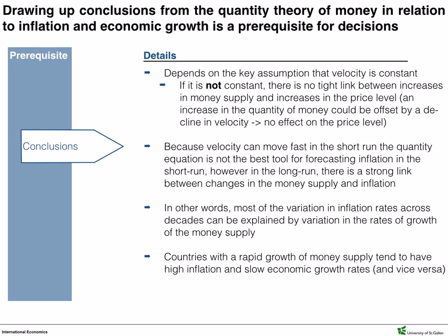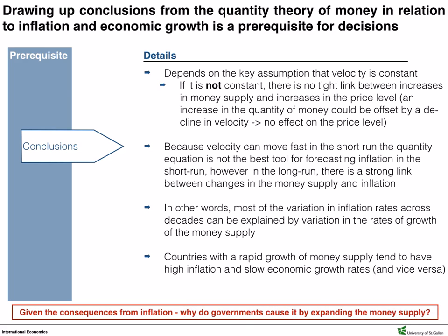Hence, there is no effect on the price level. Because velocity can move fast in the short run, the quantity equation is not the best tool for forecasting inflation in the short run. However, in the long run, there is a strong link between changes in the money supply and inflation. In other words, most of the variation in inflation rates across decades could actually be explained by variation in the rates of growth of the money supply. Countries with rapid growth of money supply tend to have high inflation and slow economic growth rates, and vice versa.